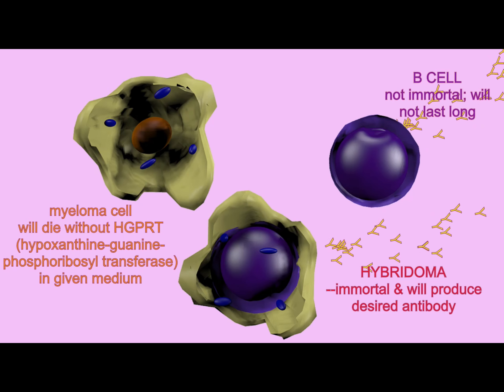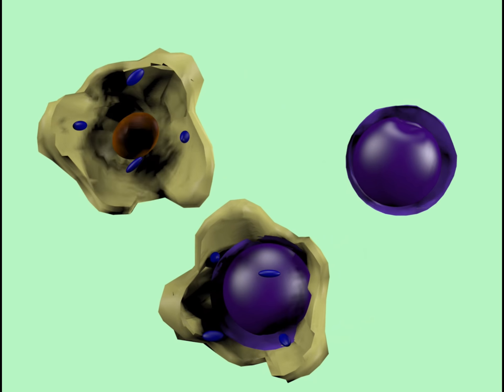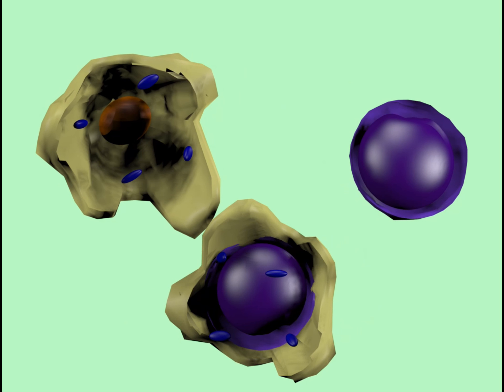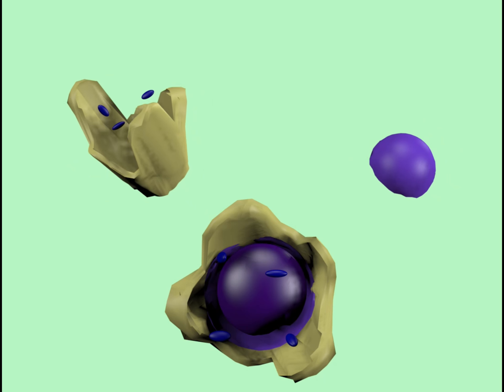HGPRT is a metabolite required for DNA synthesis, so those myeloma cells, while they are potentially immortal, will die if they are put into a medium that doesn't give them this metabolite.